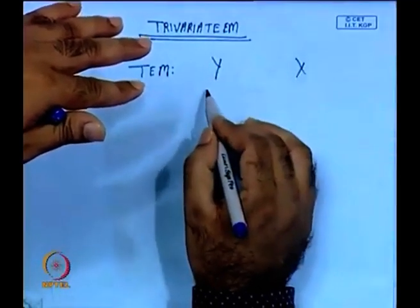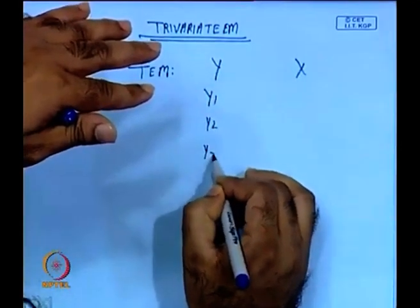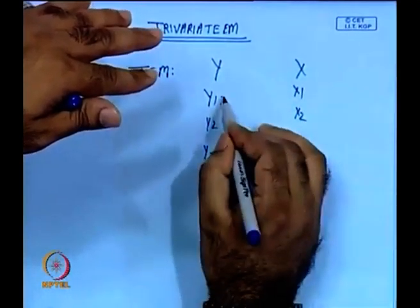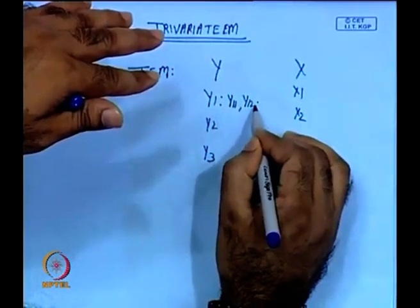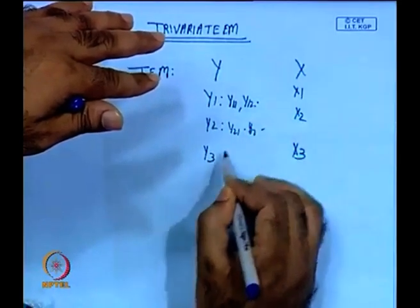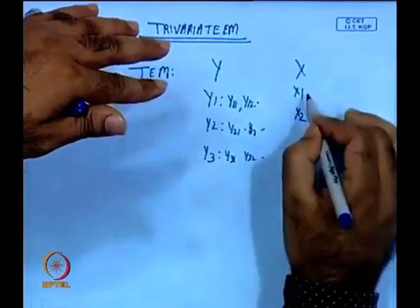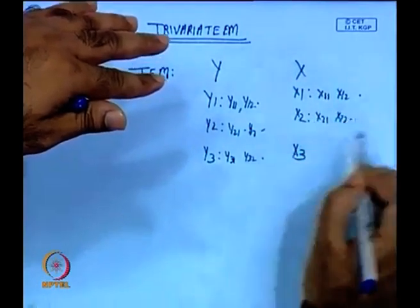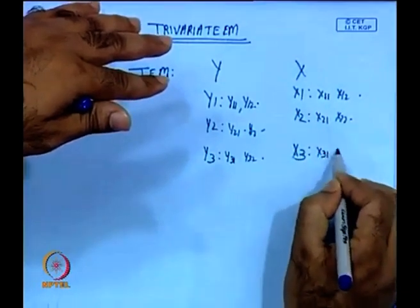Every time we discuss econometric modelling, we assume that y represents the dependent series and x represents the independent variables. Within the y series we have variables y1, y2, y3, and so on; within x we have x1, x2, x3. Within y1 there are items like y11, y12, and similarly for x: x11, x12, x21, x22, x31, x32, and so on.